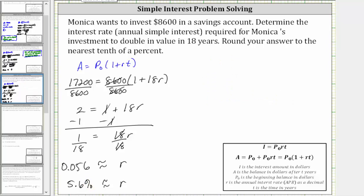So now we know Monica must earn 5.6% annual simple interest for her investment to double in 18 years.